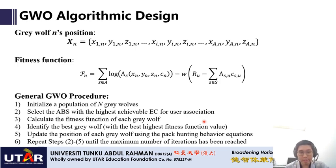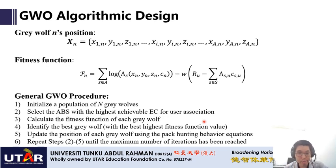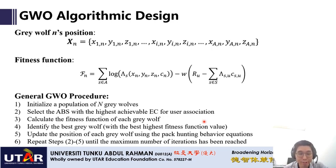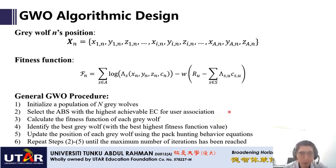After updating positions, the process repeats: selecting aerial base stations with the highest achievable effective capacity based on new gray wolf positions, recalculating fitness function values, identifying the best gray wolf, and repeating until the maximum number of iterations is reached. After the entire algorithm, the best gray wolf position is the final solution for the load balancing problem.